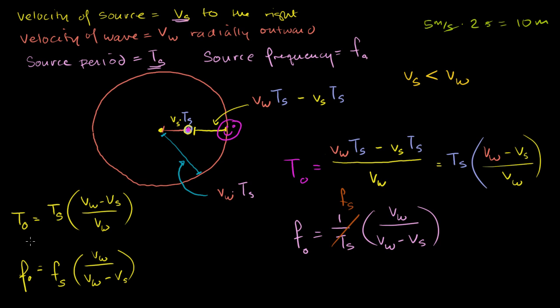In the last video, we figured out the formulas for the observed period and frequency for an observer sitting in the path of the source — so the source is moving towards the observer. This is the example where the train is moving towards you, and you perceive the train's horn as having a higher pitch or a higher frequency.